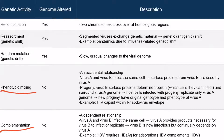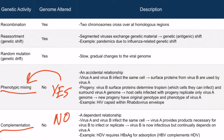Complementation and phenotypic mixing are very similar. If you get confused on an exam, think about the virus that receives the protein products and ask: can that virus be infectious without the other virus? If yes, it's phenotypic mixing. If no — it cannot be infectious without the other virus — then you're dealing with complementation, because complementation is a dependent relationship.